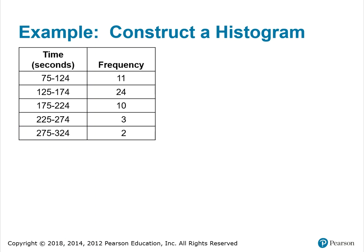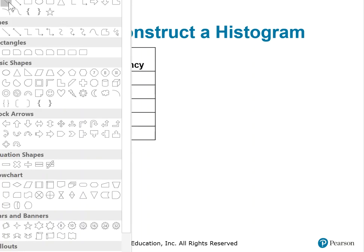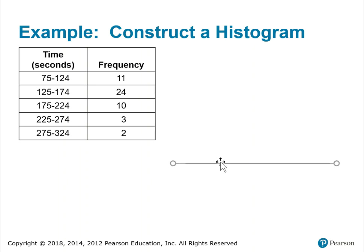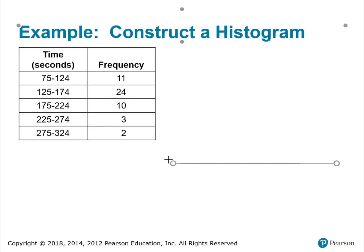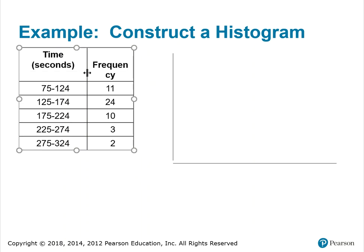Here's an example. We're going to take this frequency distribution — time in seconds for the classes and the frequency of data point counts for those classes — and construct a histogram. To construct a histogram, you first start by drawing your horizontal and vertical axes. I'll go ahead and draw those and then label each axis.